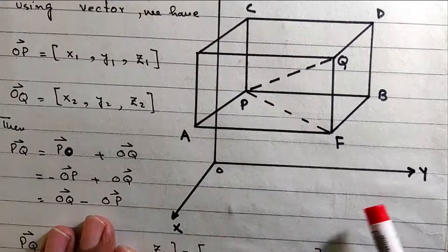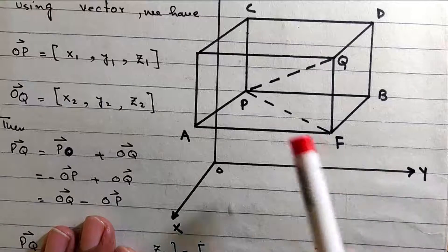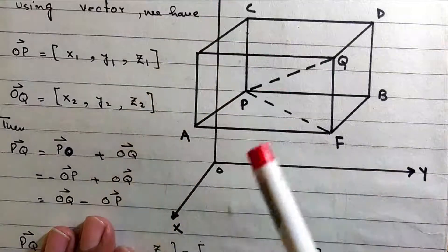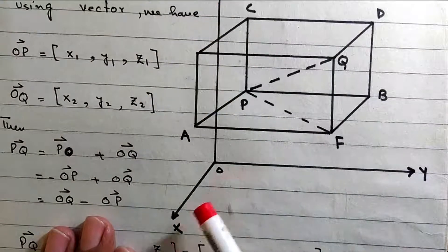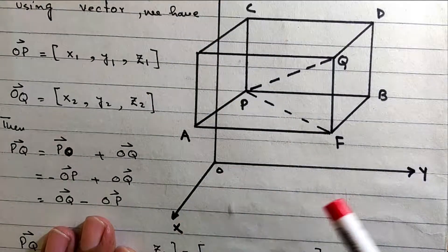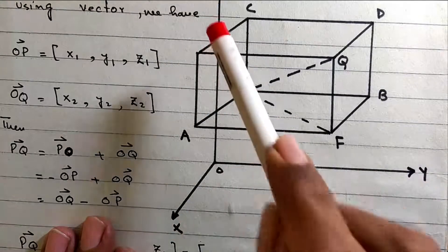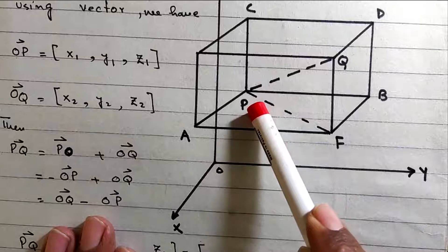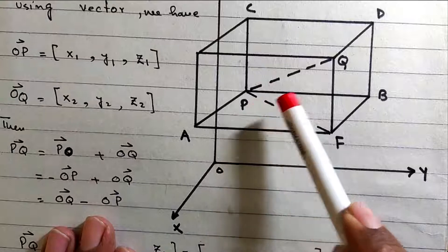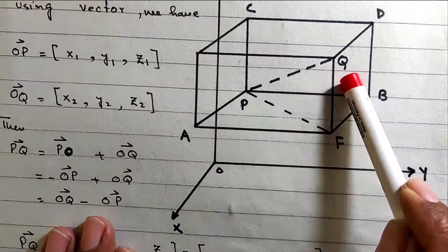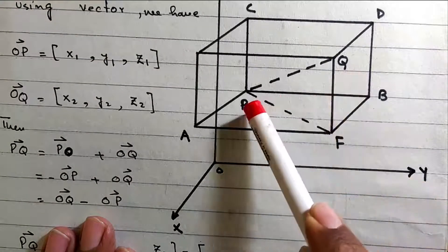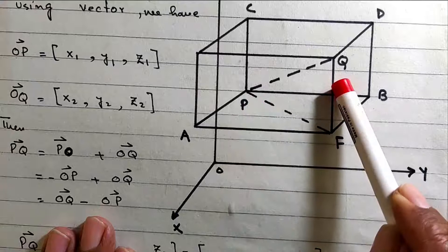Here is the y-axis and this is the z-axis. Here is the origin, x-axis, y-axis, z-axis. Here is point P and here is point Q.